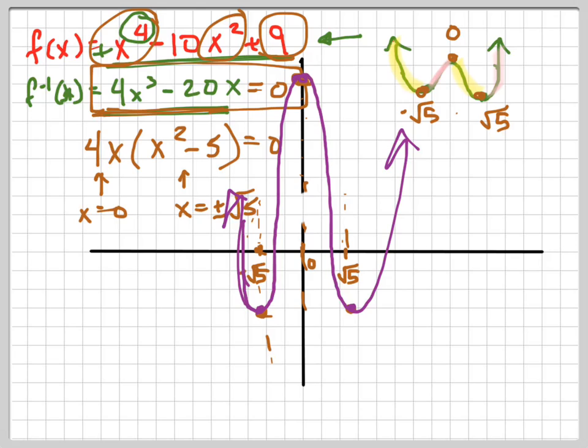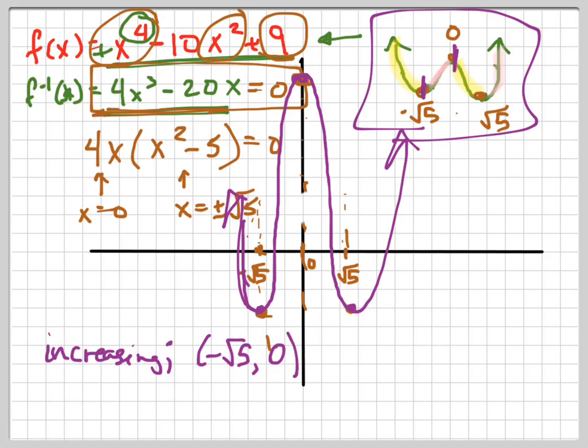The increasing intervals are the pink ones over here. From there to there, it's increasing. So it's increasing from negative root 5 to 0, union, I usually want you to write it like that, from root 5 to infinity, because from there to infinity, it's increasing.